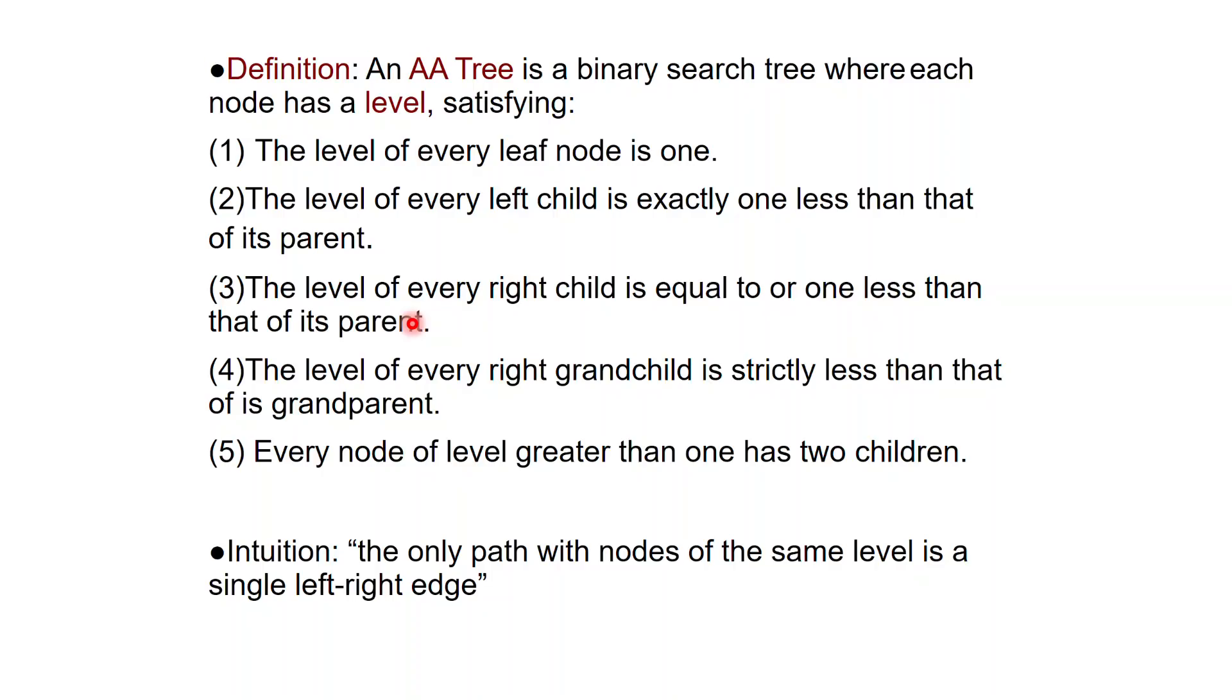However, if you go to a right grandchild, then it has to be strictly less than that of its grandparent. So if you put these conditions together, you get this intuition that the only path with nodes at the same level is a single left right edge. And we also require that the tree is essentially complete. So every node except those at level 1 must have 2 children.